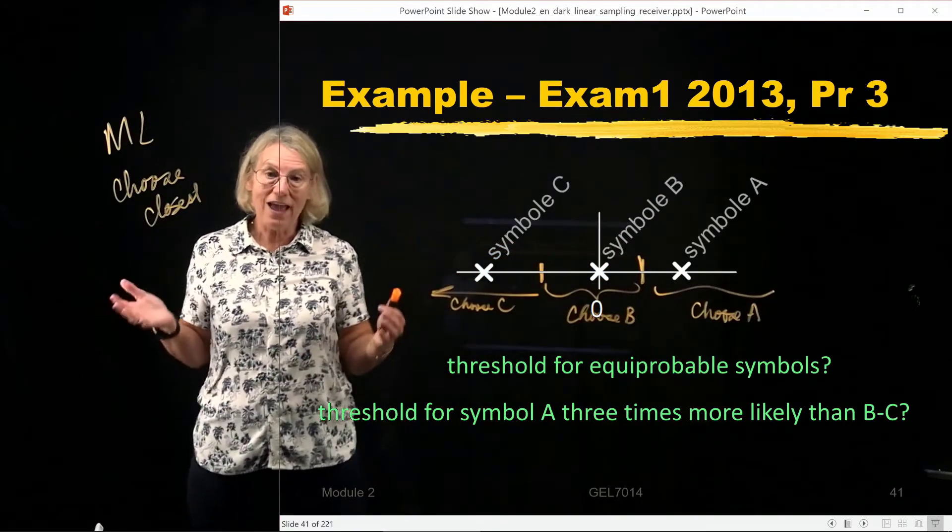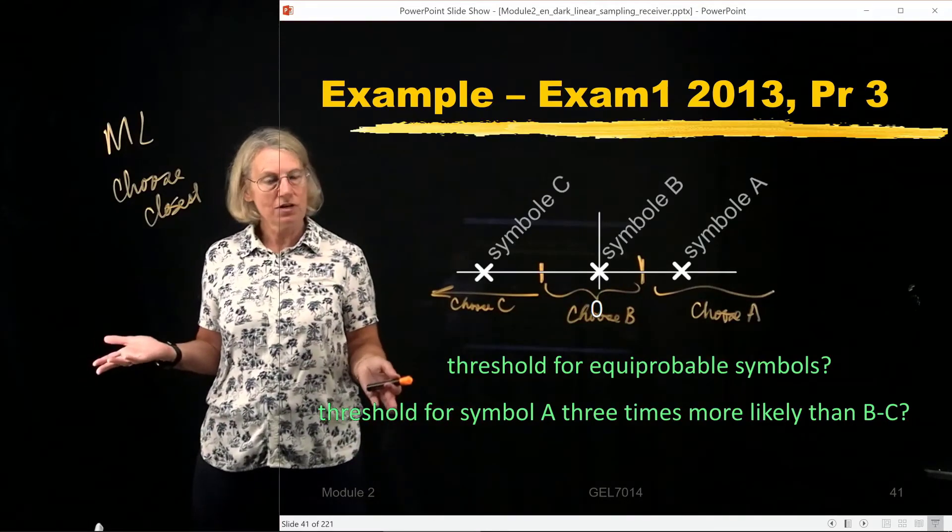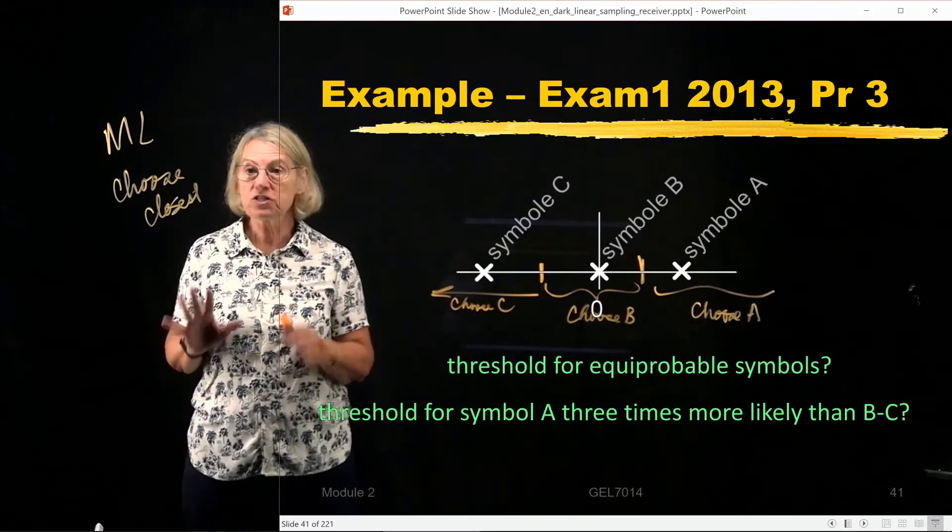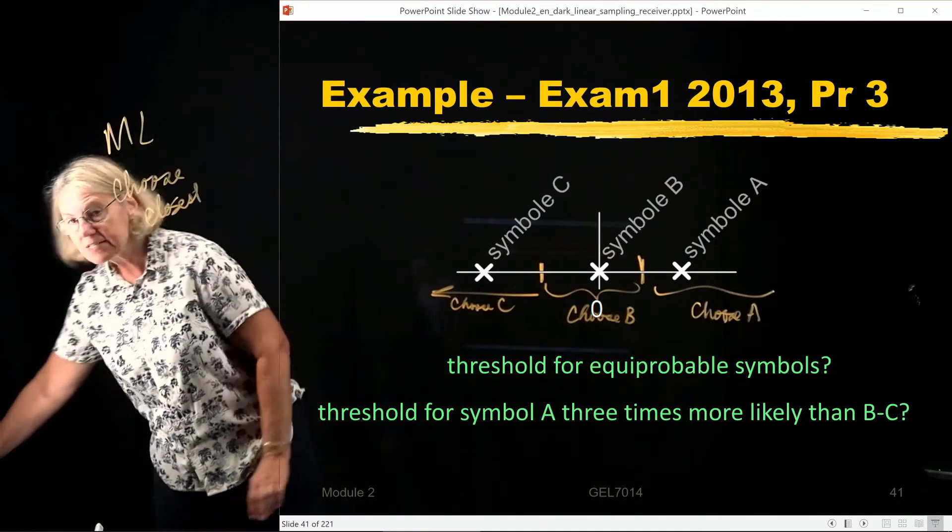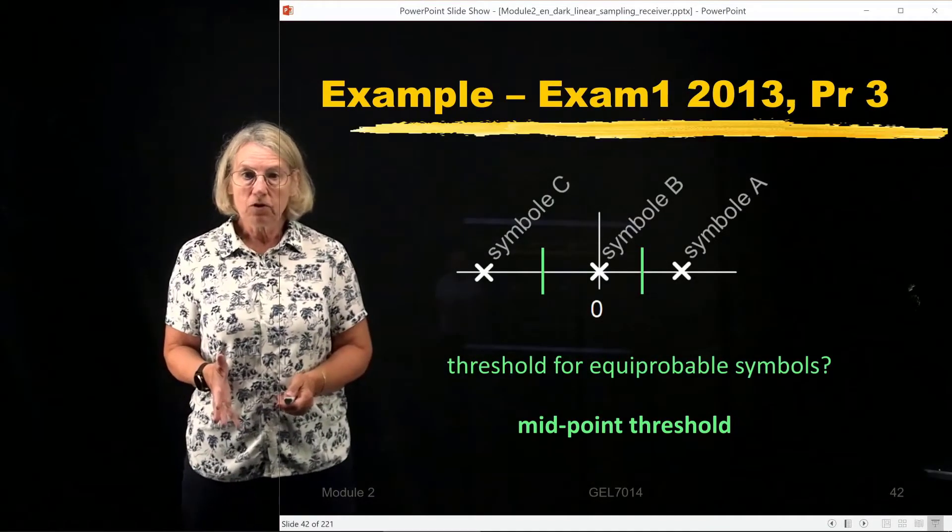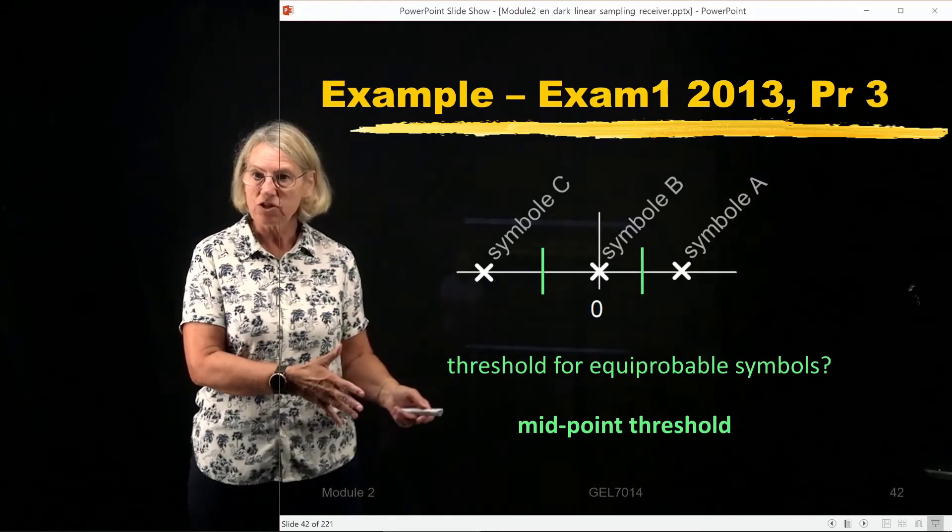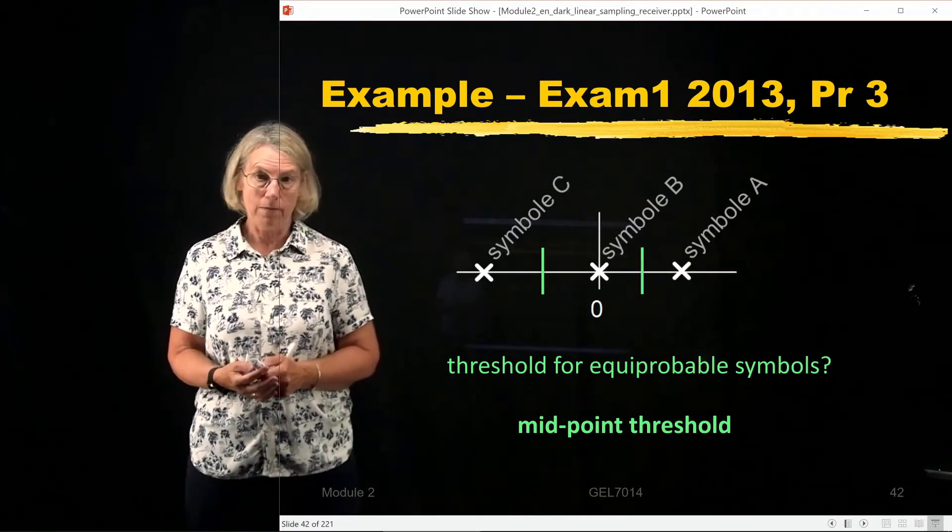Now when A is three times more likely, well then I have to get a little more precise. For sure it's going to move. There's no longer going to be these midpoints. There will be some other points that will be necessary. So if they were equiprobable, we would have these midpoint thresholds. And when we say that symbol A is more probable, if it's more probable, I'm going to want to just choose A more.